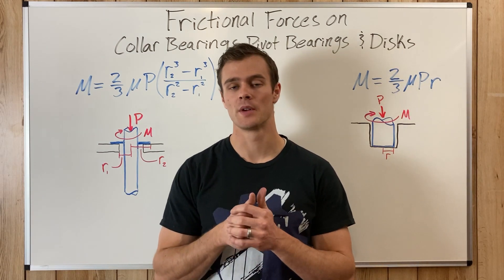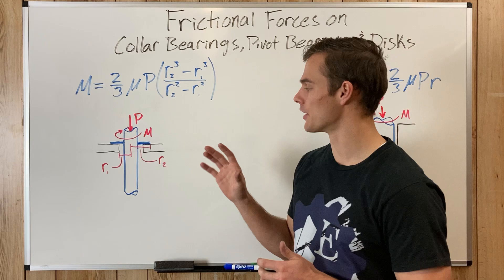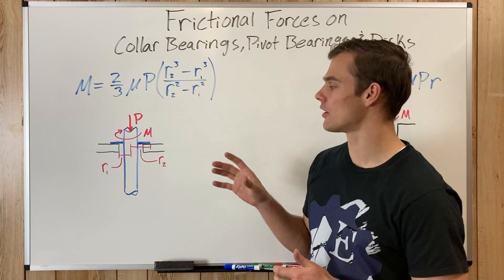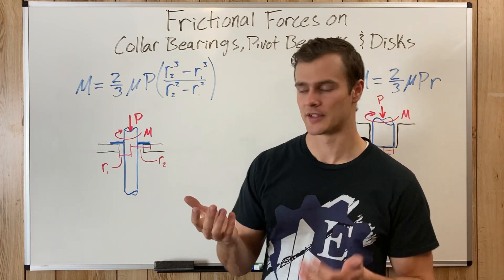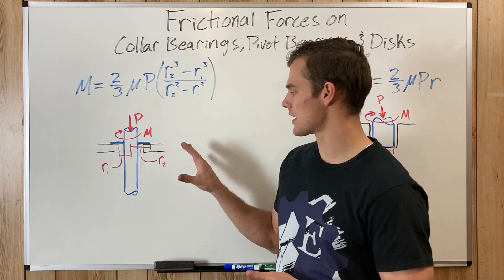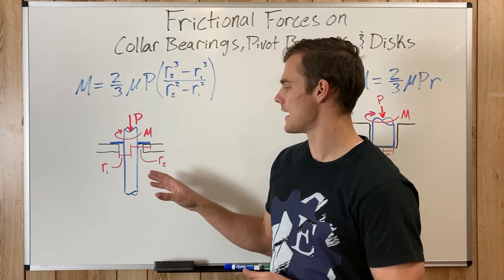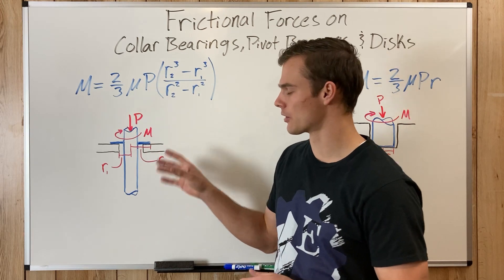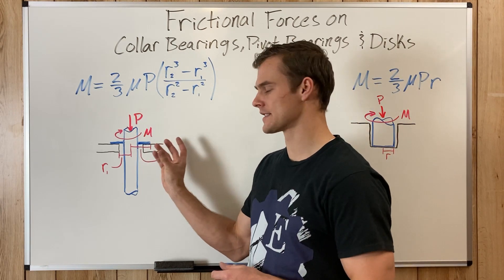So what we need to start off with is understanding what pivot bearings and collar bearings are. Well, we know what discs are, but a collar bearing, we've got a side view here of one, and it is an axle or a rod with a disc around it.